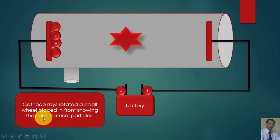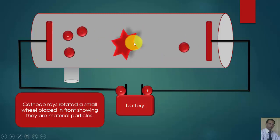Cathode rays rotated a small wheel placed in front, showing they are material particles. When a paddle wheel or a small pin wheel was placed in front of this radiation, it was observed that this pin wheel started rotating, showing that the radiation coming from this side carries material or matter and they are material particles having momentum.